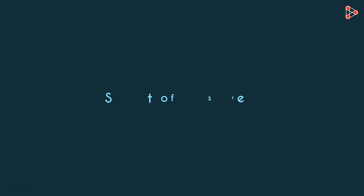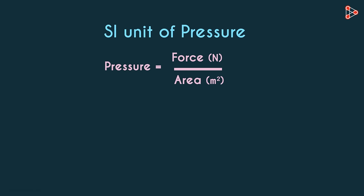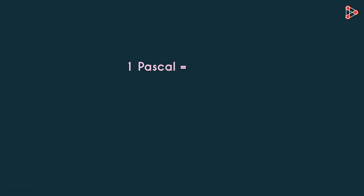What is the SI unit of pressure? As it's force over area, it would be Newton per meter squared. This is the SI unit of pressure. And this is also called as Pascal. One Pascal is one Newton over one meter squared.